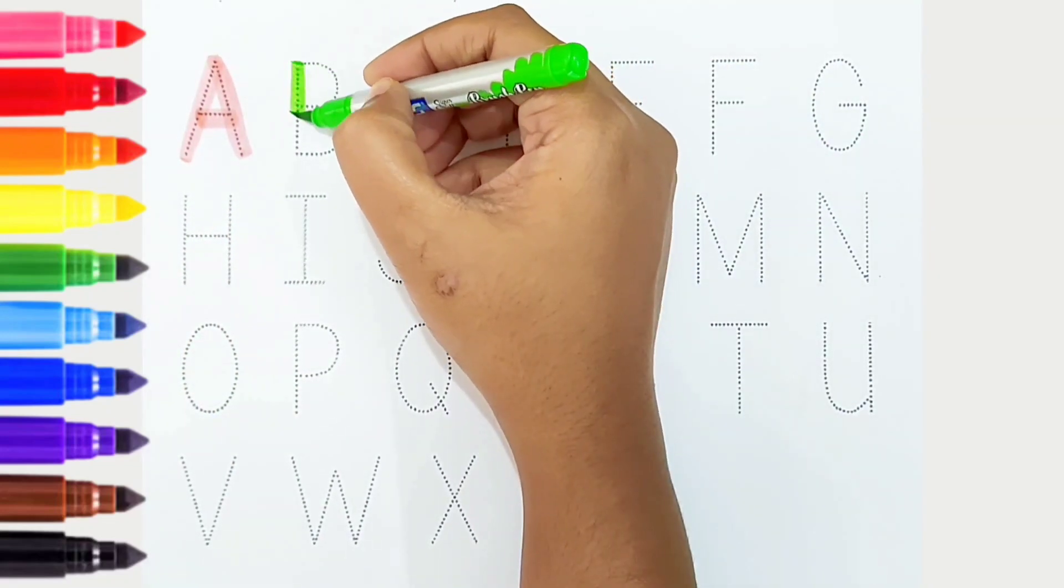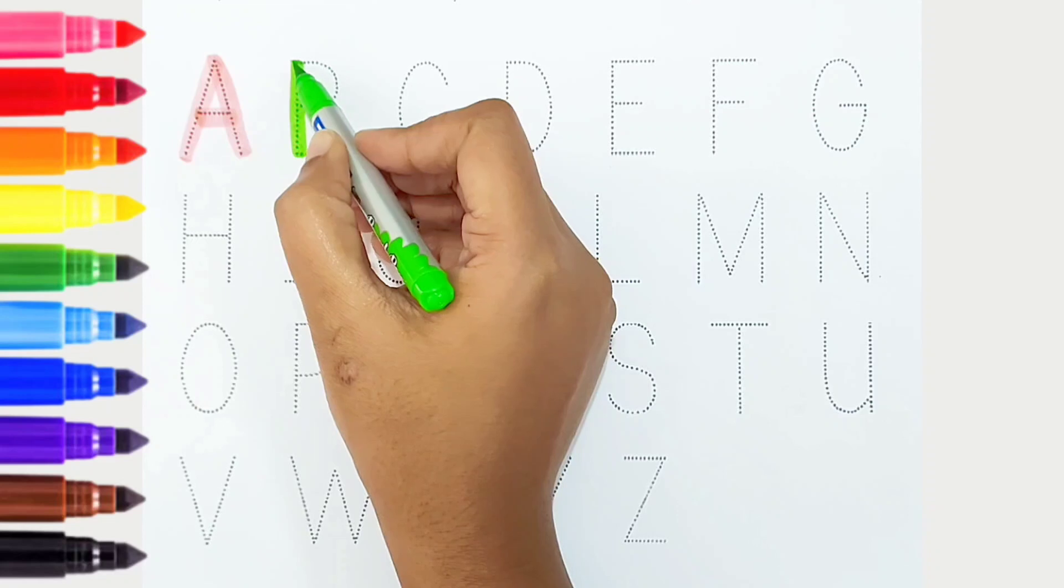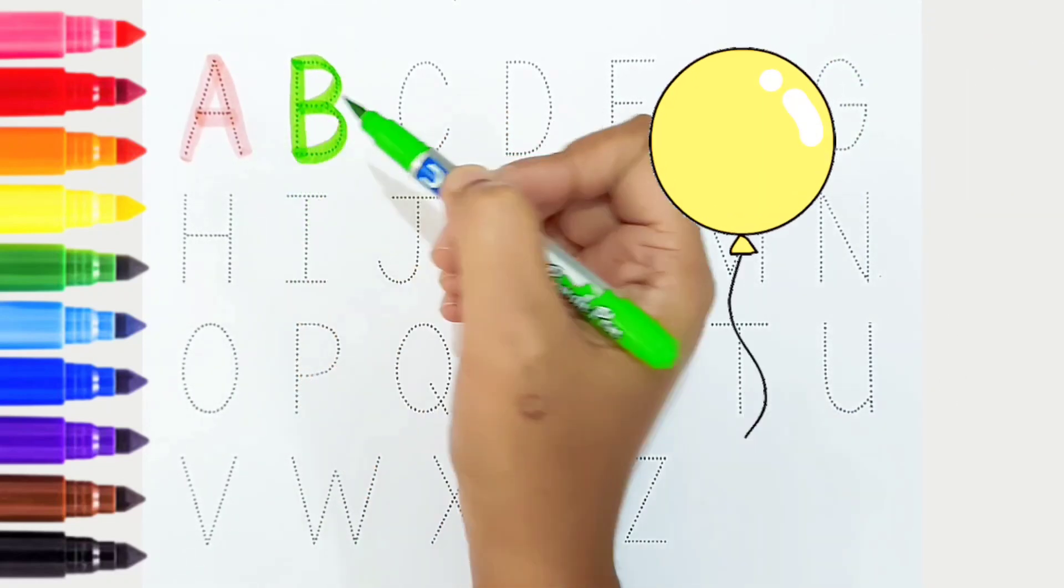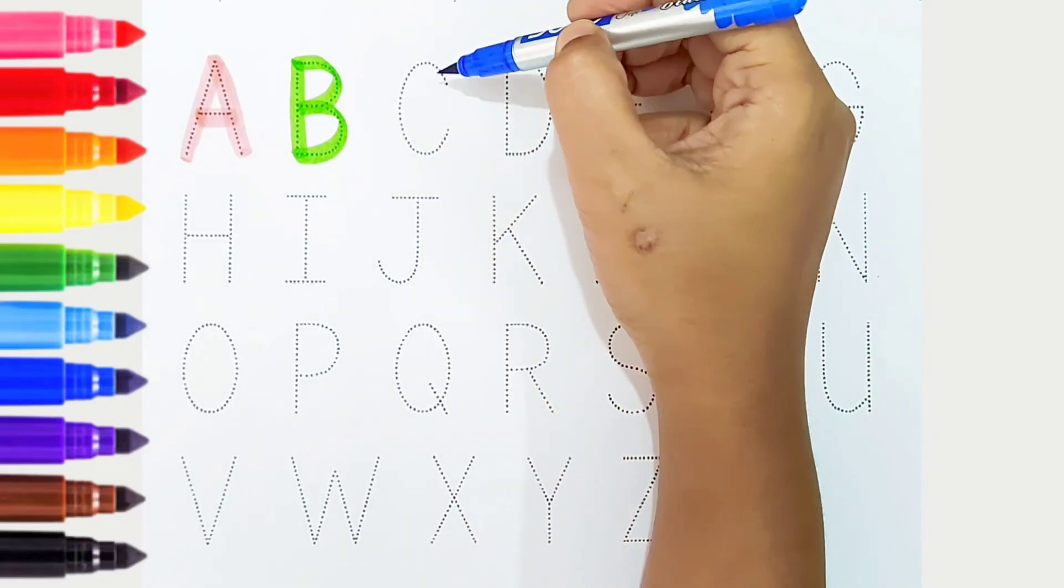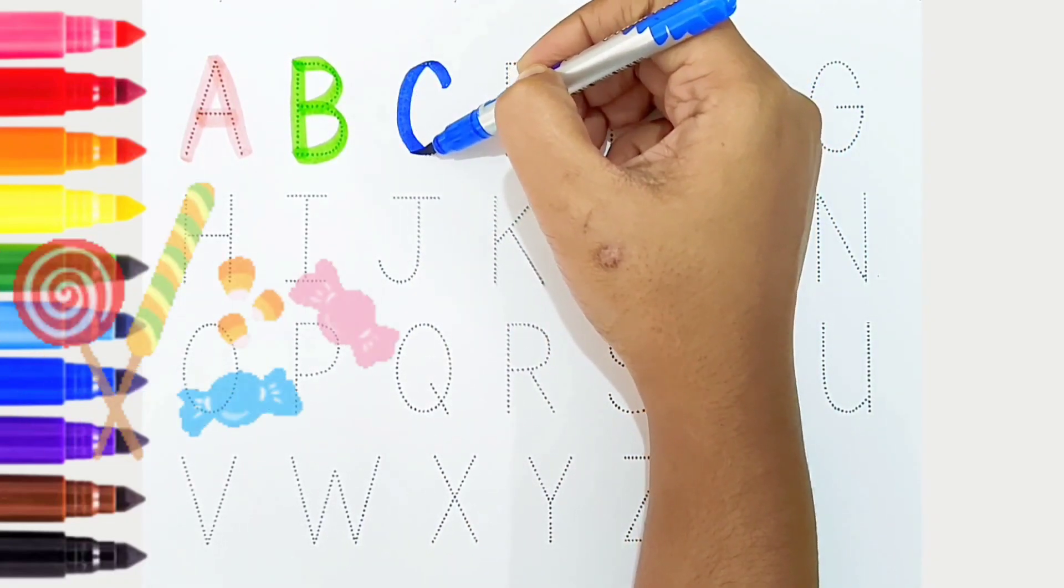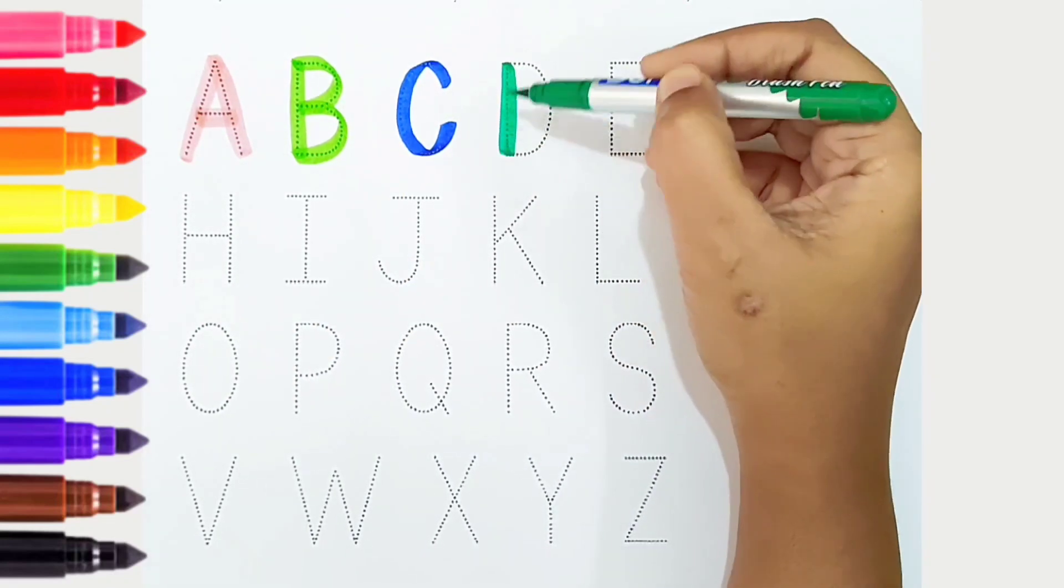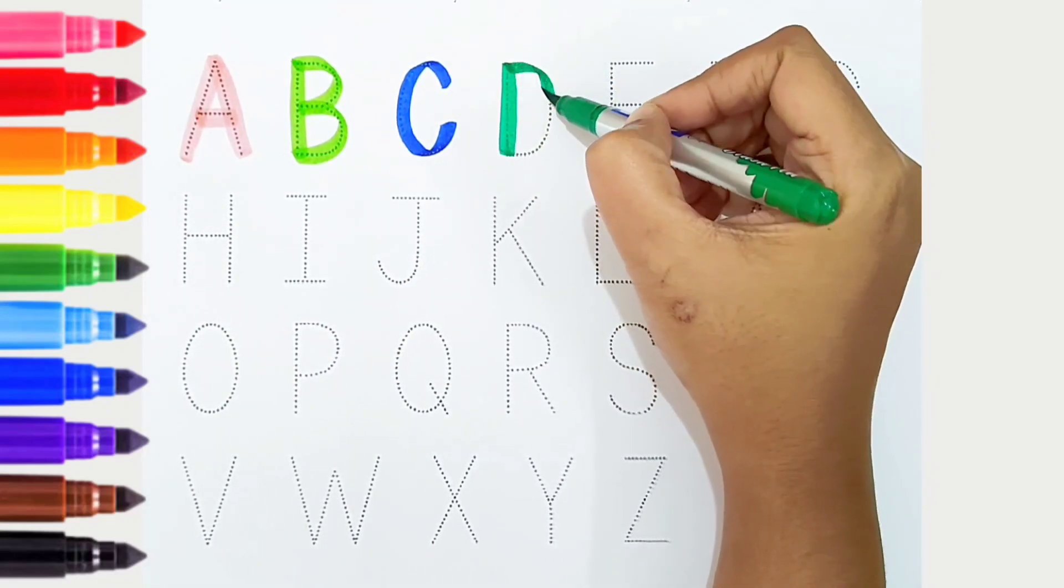B, light green color, B is for balloon. C, dark blue color, C is for candy. D, dark green color, D is for dog.